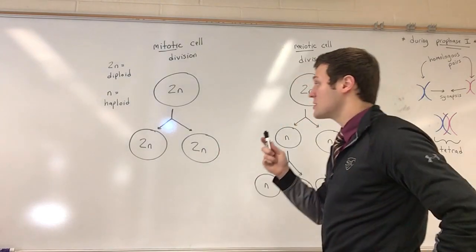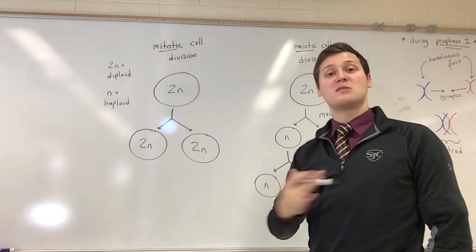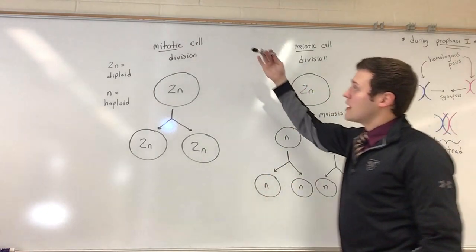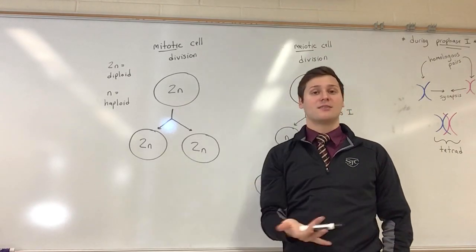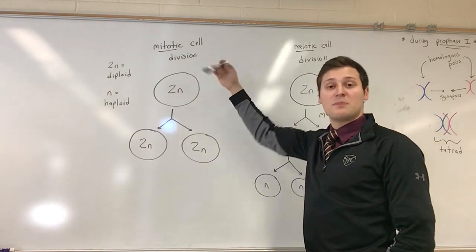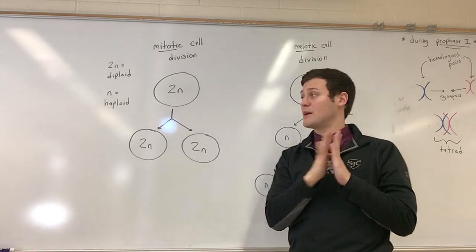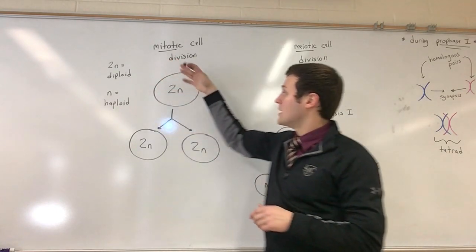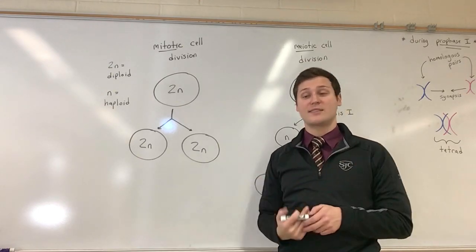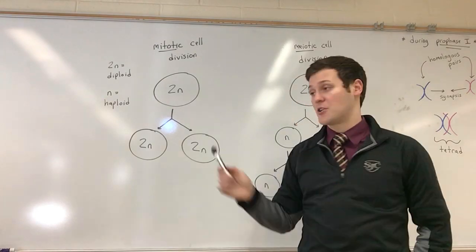First, I wanted to compare mitotic cell division with mitosis versus meiotic cell division with meiosis. If we look at a cell that undergoes mitotic cell division, we start off with a diploid cell — a diploid has two sets of chromosomes, all of them paired up with their homologous pairs. By the end of mitosis we will have two identical diploid daughter cells.